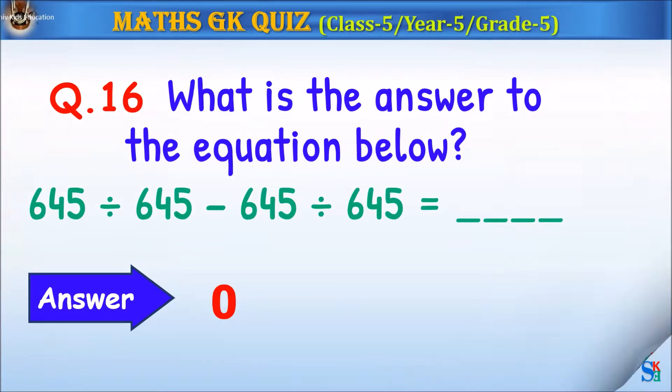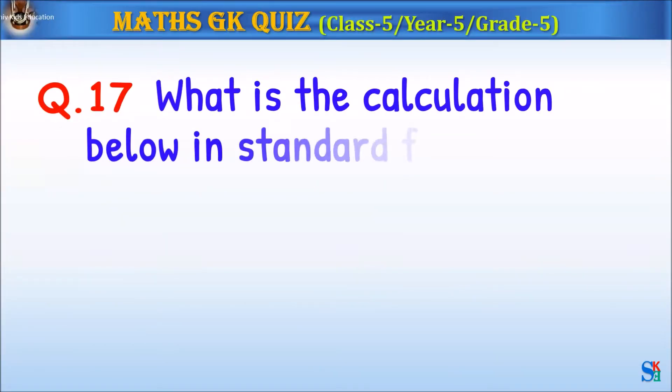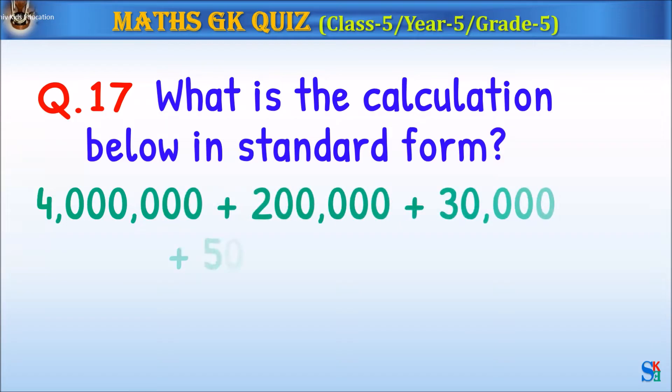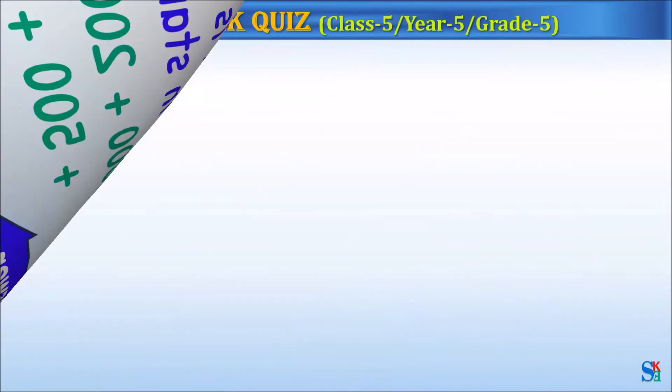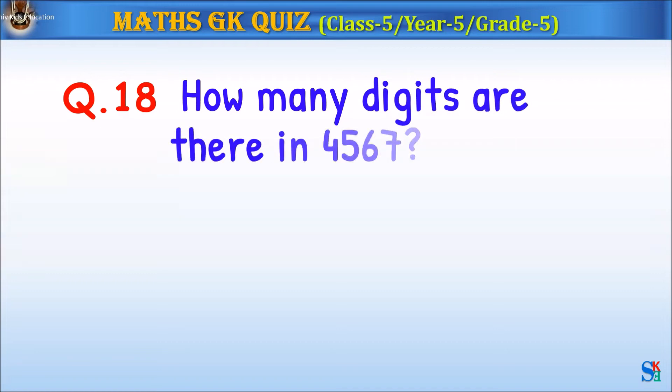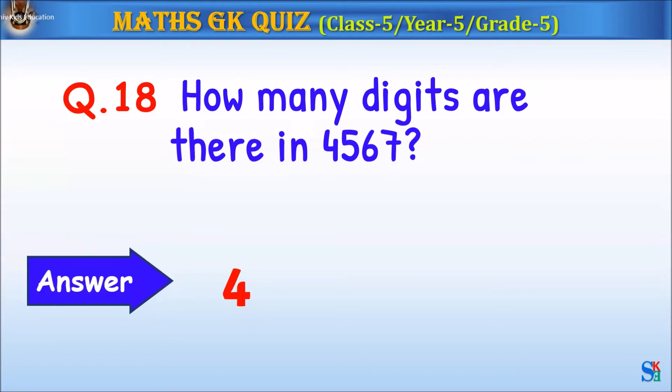Question 17: What is the calculation below in standard form? The answer is 4,230,552. Question 18: How many digits are there in 4,567? The answer is 4.